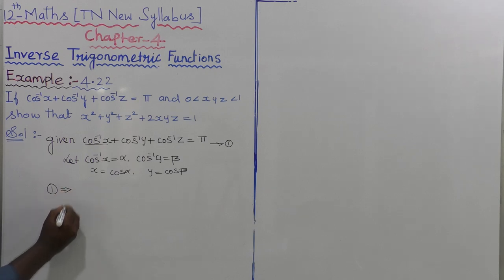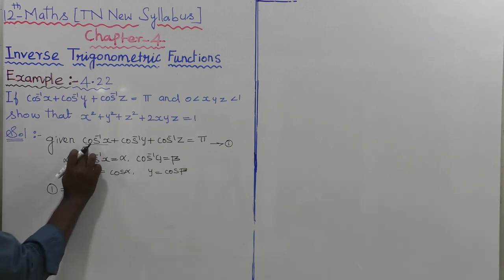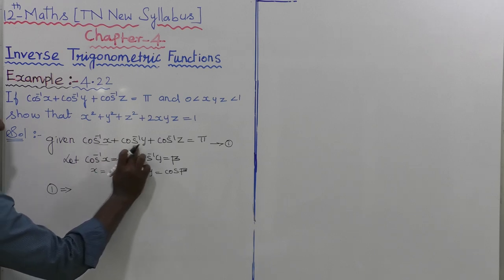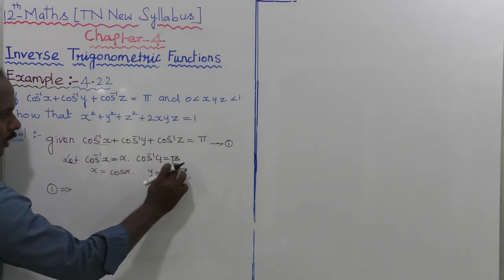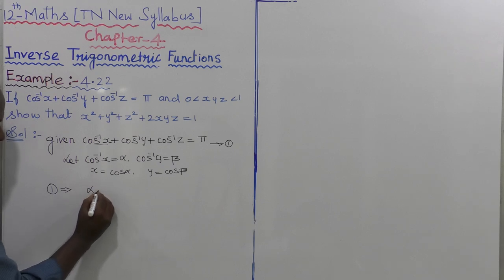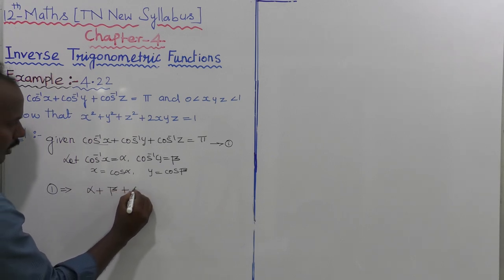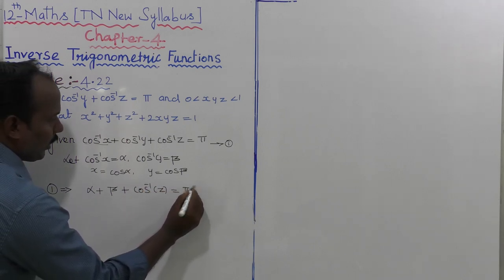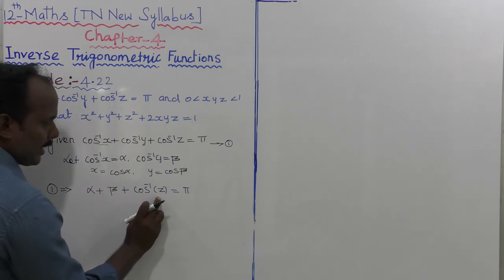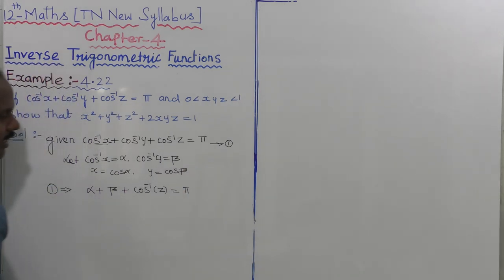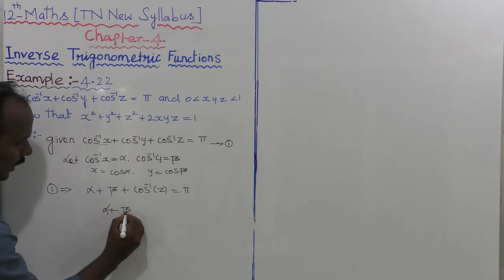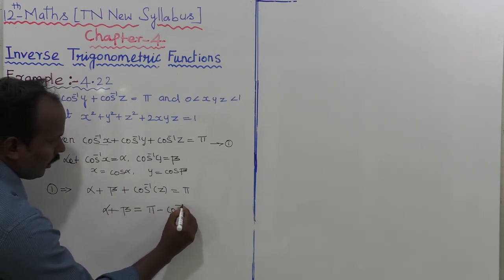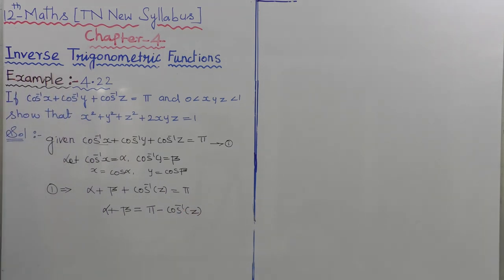From equation 1, cos⁻¹(x) = α and cos⁻¹(y) = β, which implies α + β + cos⁻¹(z) = π.